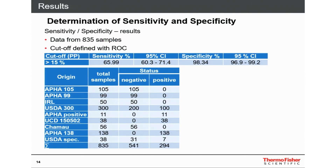With this ELISA, we determined sensitivity and specificity using 835 samples. We defined the cutoff with a ROC analysis. With a cutoff of 15%, we achieved a sensitivity of 66% and a specificity of about 98%, which was in the expected range. The animals tested included samples from Ireland, England, the USDA, and Swiss negative animals — a total of 835 positive and negative animals.